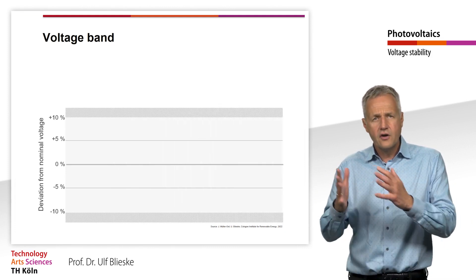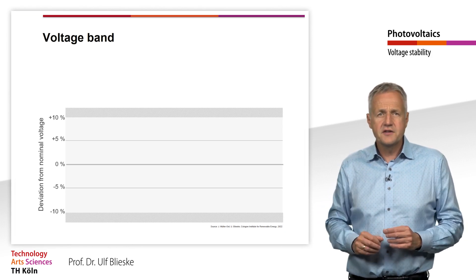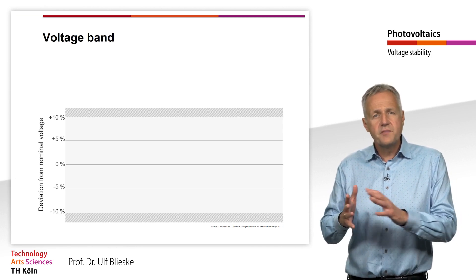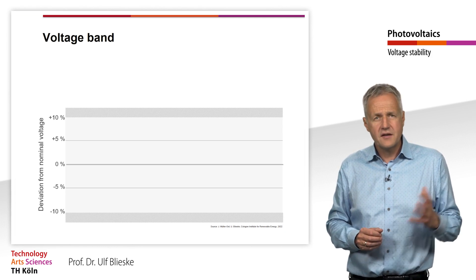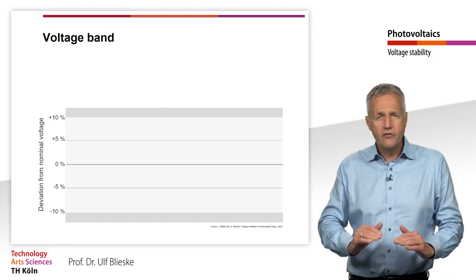Since the voltages of the low and medium voltage grids are rigidly coupled, the available voltage band of ±10% must be divided between the medium and the low voltage bands.